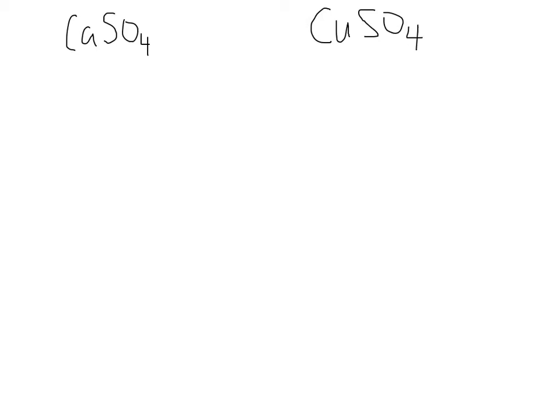Now, what is the polyatomic in both of these examples? Sulfate. So we know that sulfate is pretty much the name of each one. So it's something sulfate. Now, what is the name of the first one? We want to always identify metal, non-metal, and we have a metal here. What is that metal?